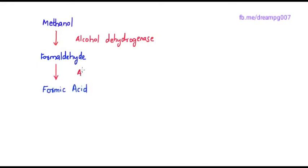Let's have a look into how methanol is metabolized inside the human body. Methanol is first acted upon by alcohol dehydrogenase enzyme and converted into formaldehyde. This formaldehyde is further acted upon by another enzyme called aldehyde dehydrogenase and converted into formic acid.